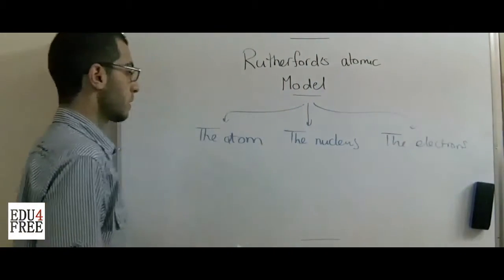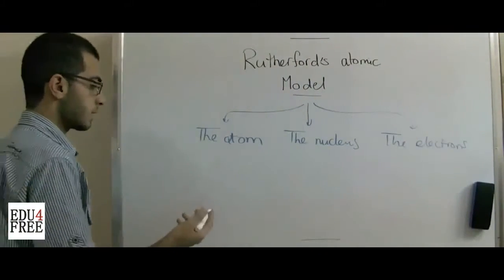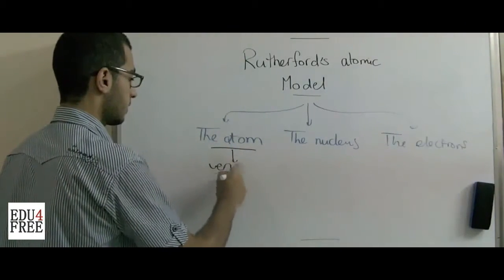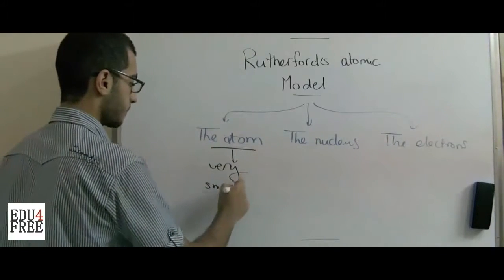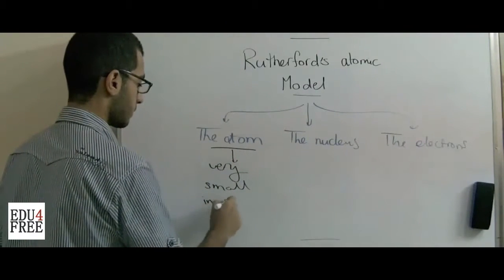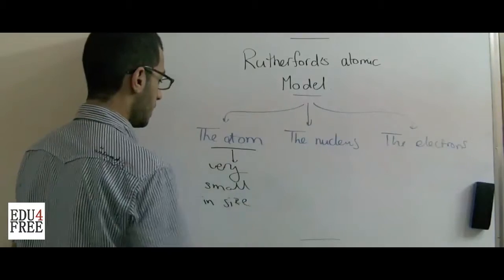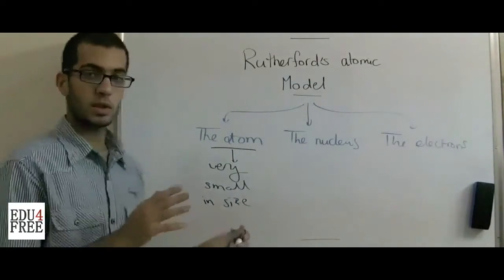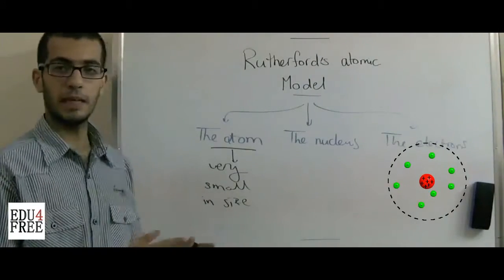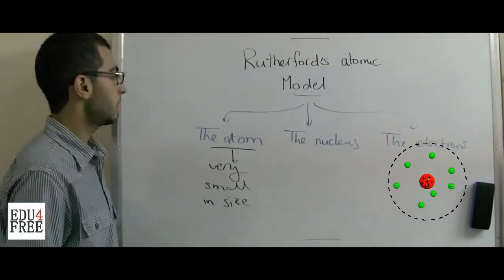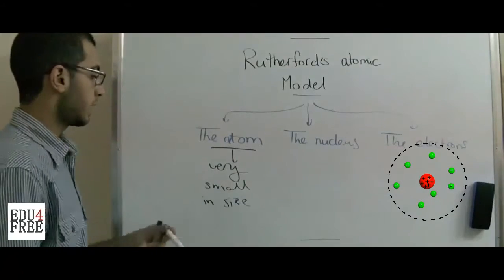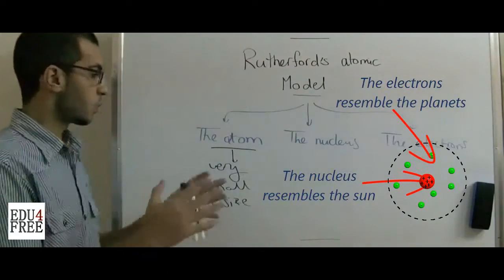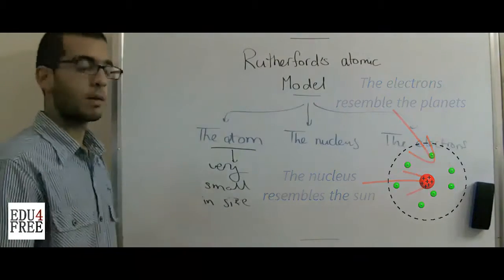First, generally, the atom is very small in size. But despite its small structure, it has a structure that is very complicated and it resembles a solar system — it consists of the sun where the planets orbit around this sun.